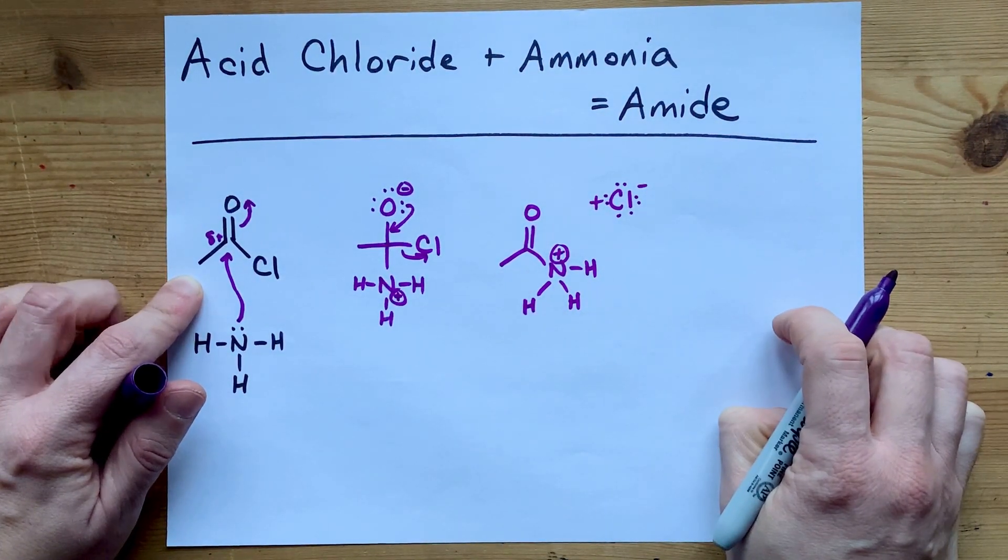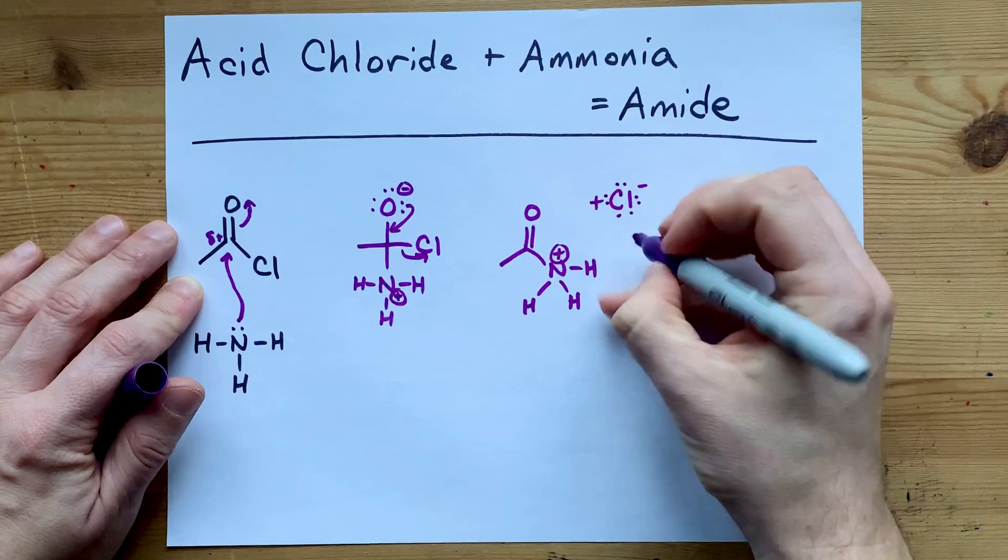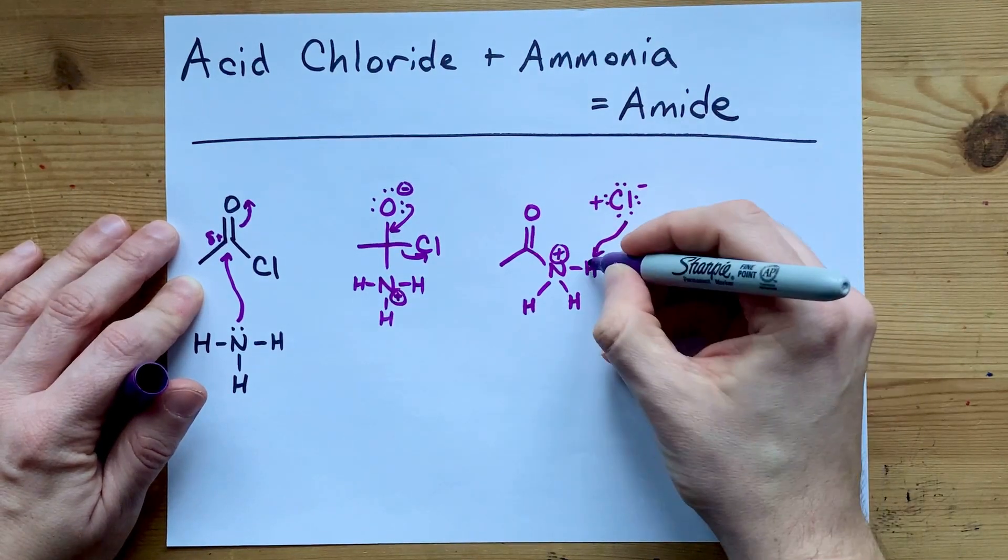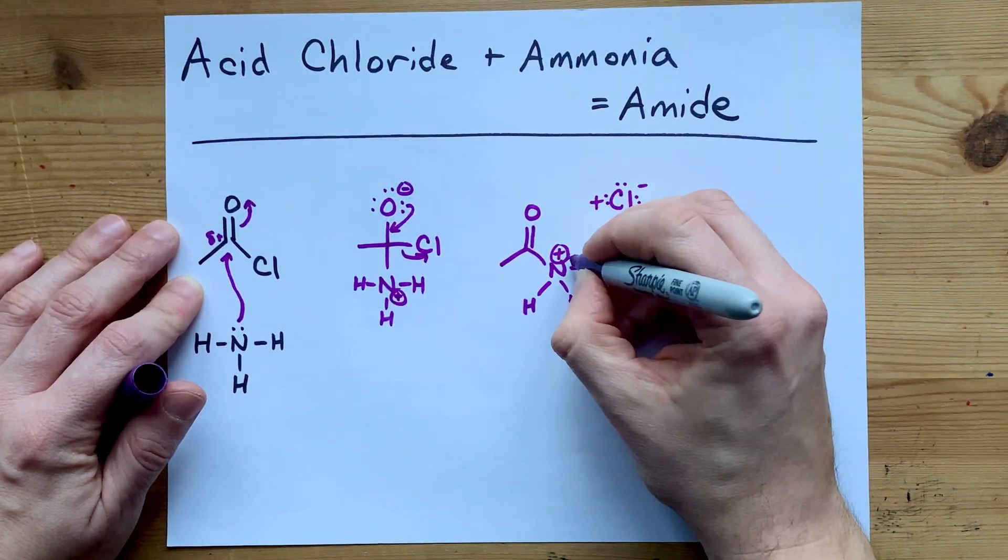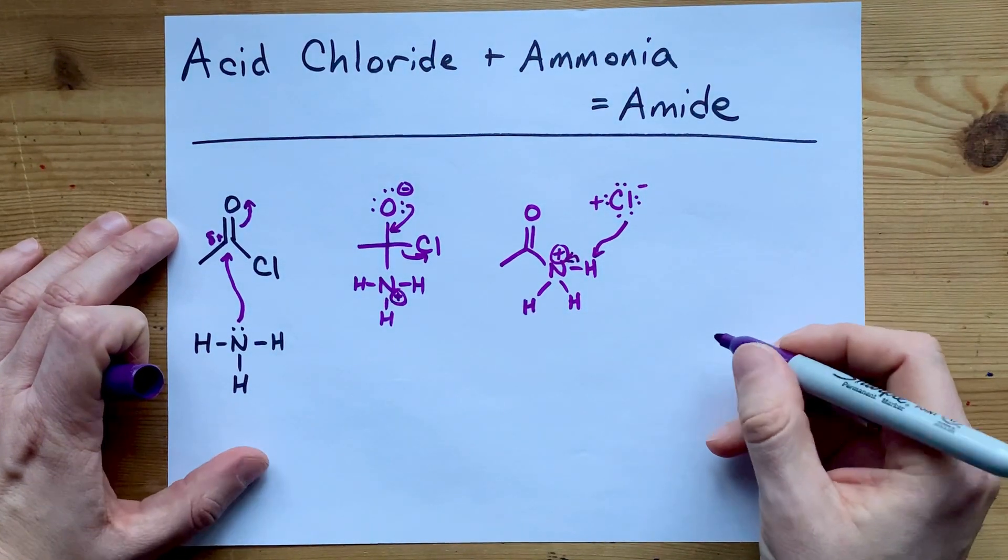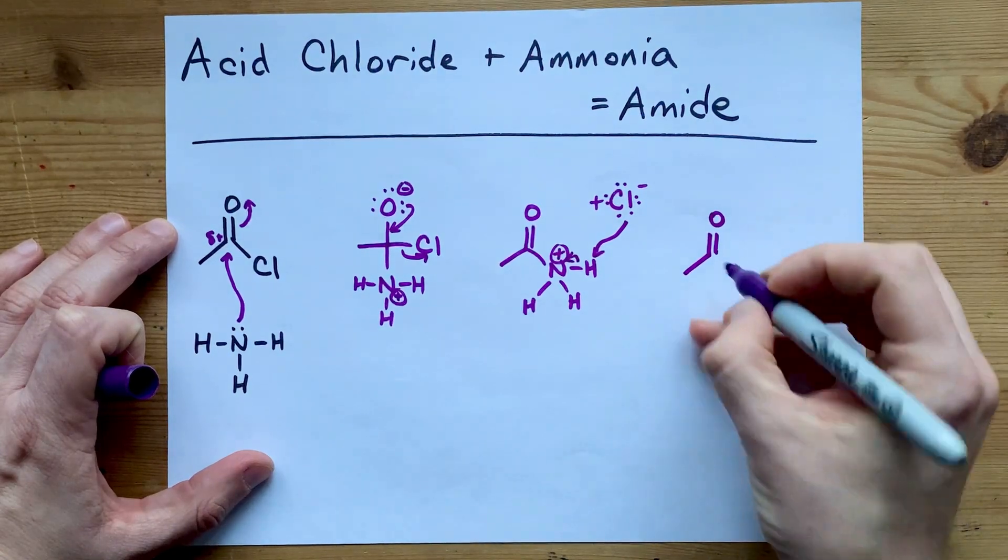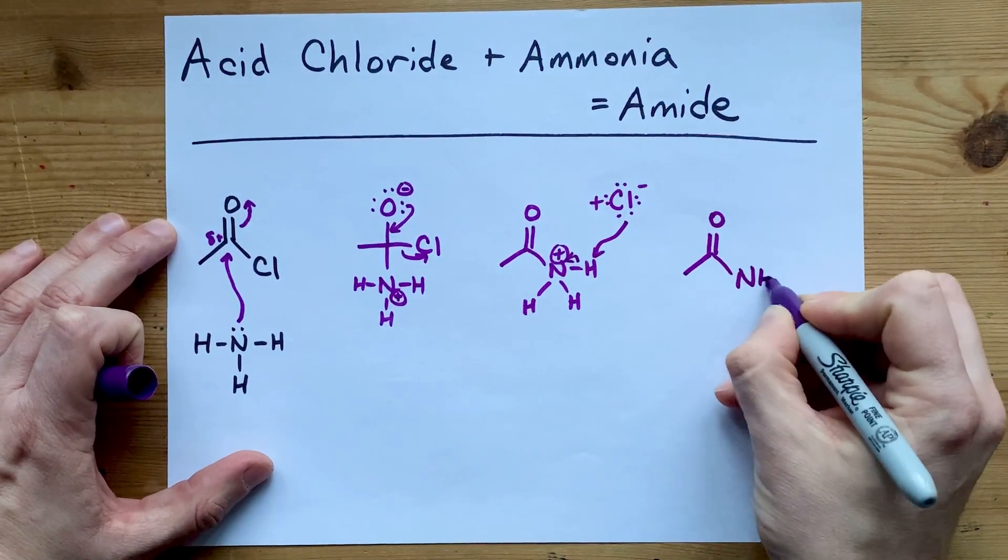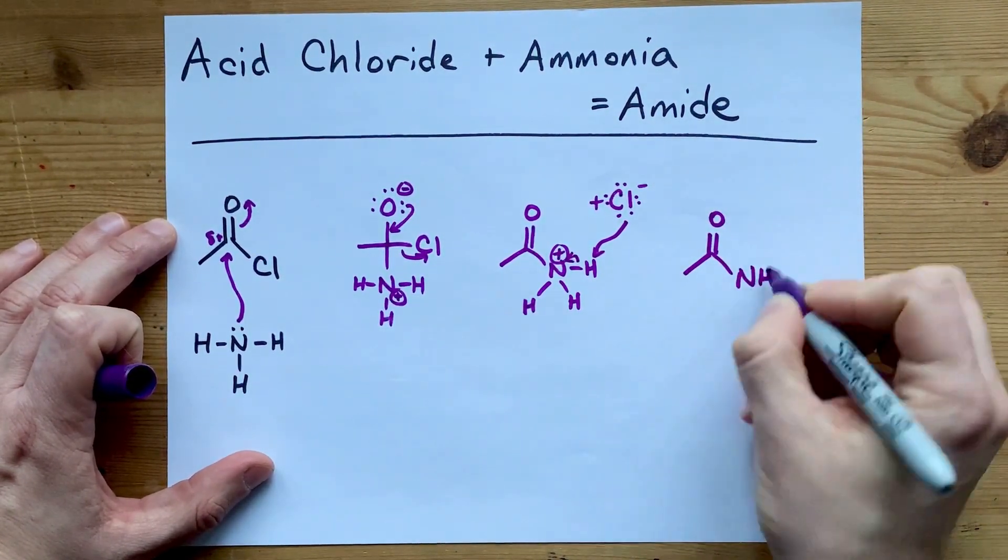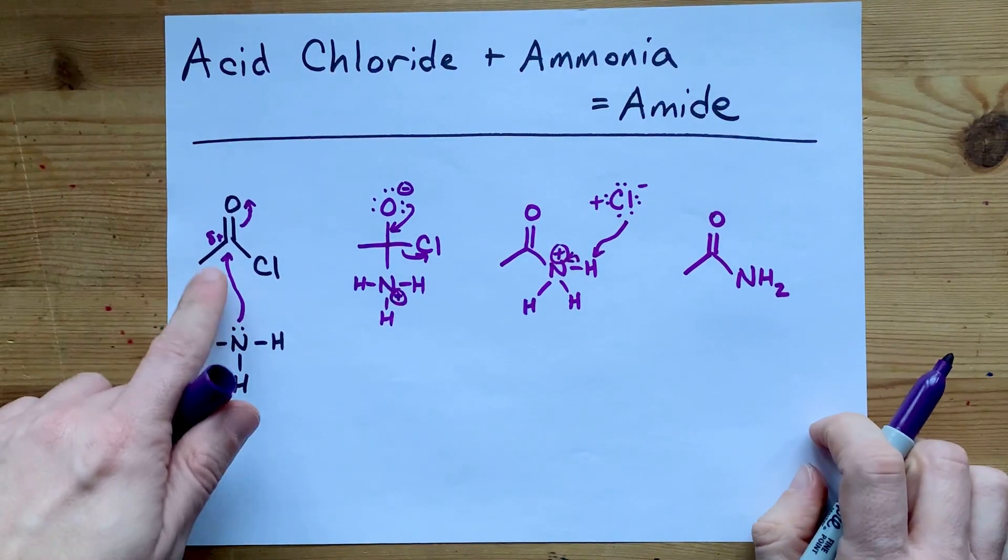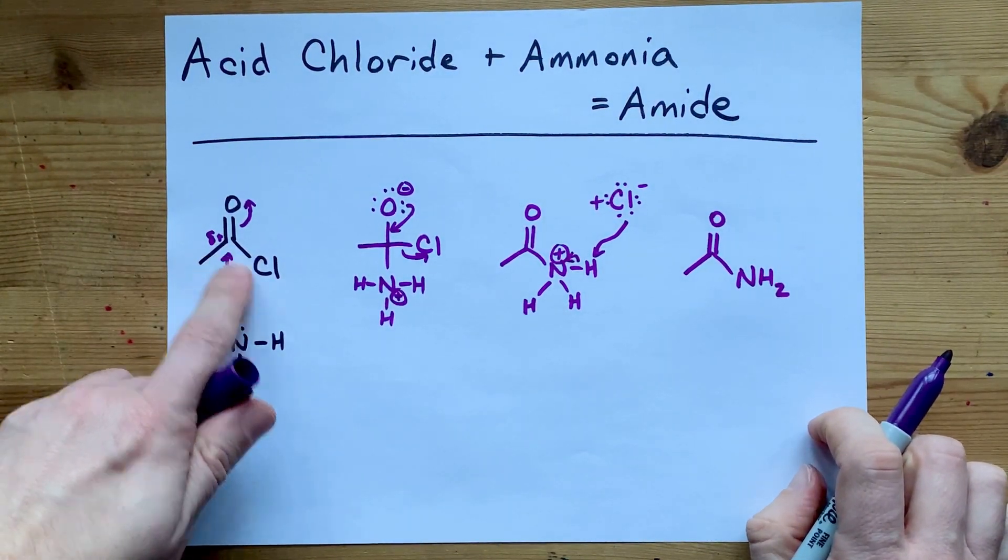That chloride can come in and steal one of those H's away, give the bonding pair of electrons to N. And thus you have a carbon with a double bonded oxygen and an NH2. This is what makes it an amide. If you start with ethanoyl chloride, you'll end up with ethanamide.